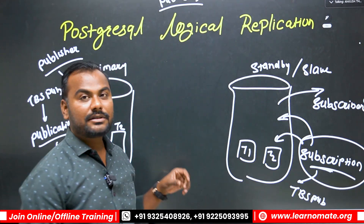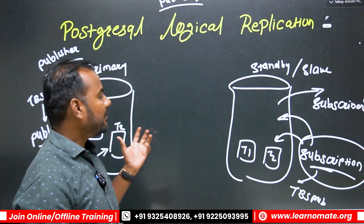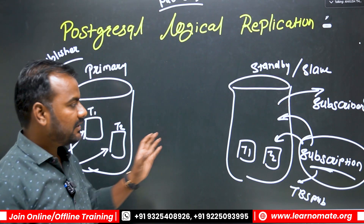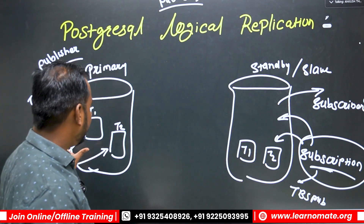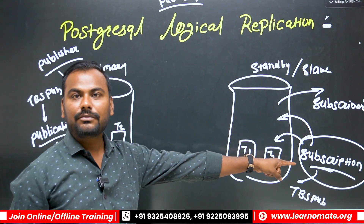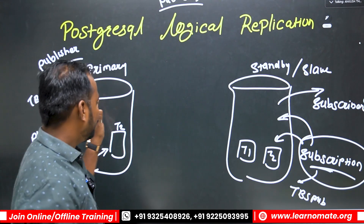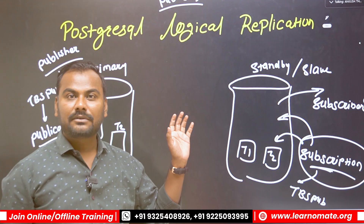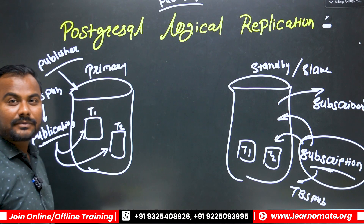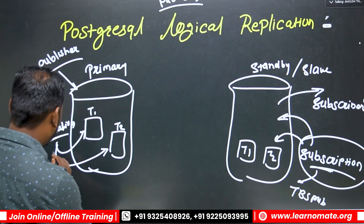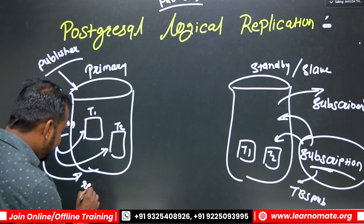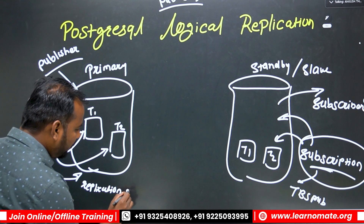You might have questions about how this is happening in the background. There is a publication, there is a subscription — the publication has changes that go to the standby side where they are subscribed and received. But there must be some background process. As soon as you create a publication on your master side, a replication slot will be created automatically.